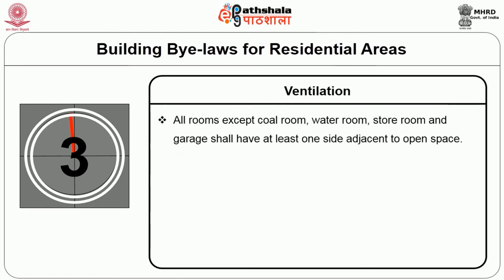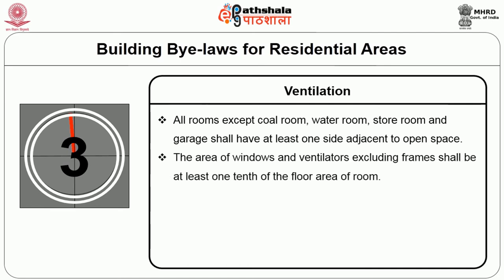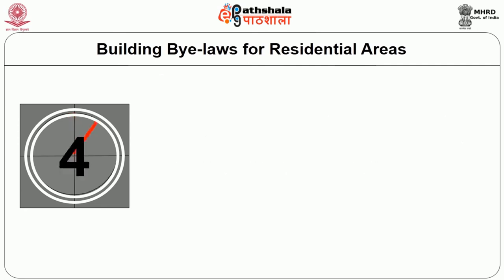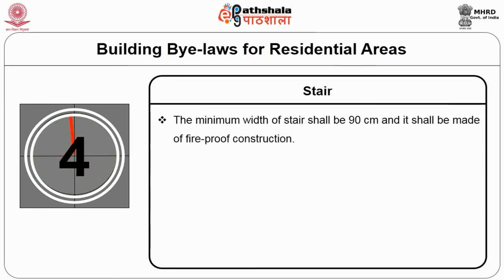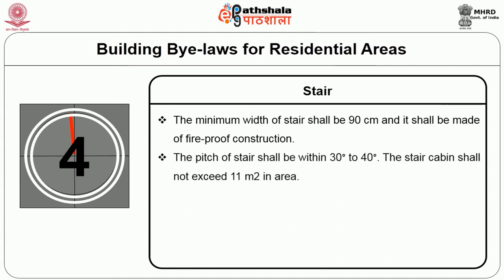Ventilation: all rooms except cold room, water room, store room, and car garage shall have at least one side adjacent to open spaces. The area of windows and ventilators, excluding frames, shall be at least one-tenth of the floor area of the room. Staircase: the minimum width of the staircase shall be 90 cm and it shall be of fireproof construction. The pitch of the staircase shall be within 30 to 40 degrees. The staircase cabin shall not exceed 11 m² in area.